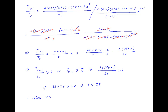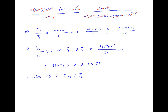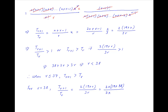Therefore, when r is less than or equal to 37, T(r+1) will always be greater than T(r). And when r is equal to 38, the ratio T(r+1) upon T(r) equals 2(19+38) divided by 3 times 38, which is equal to 2 times 57 divided by 3 times 38, and this is equal to 1.